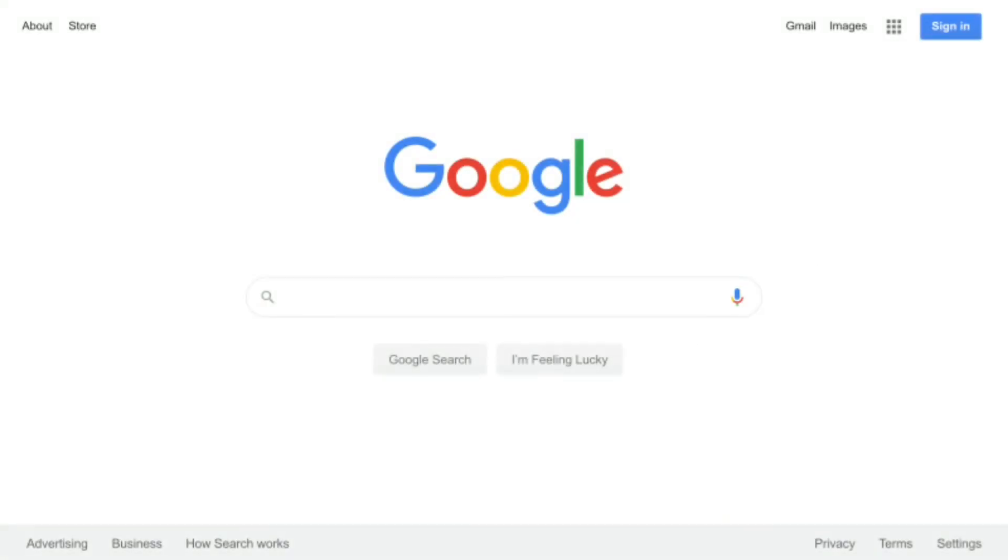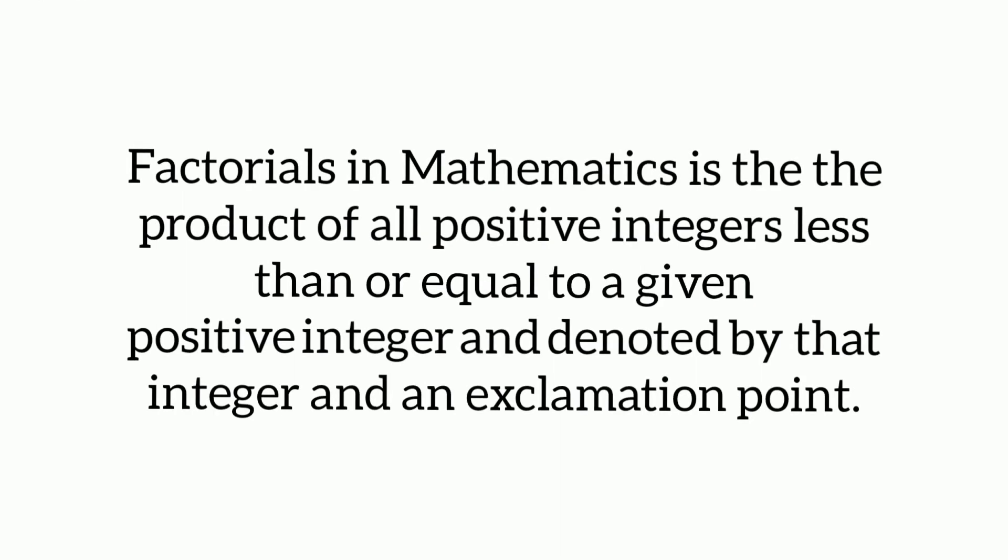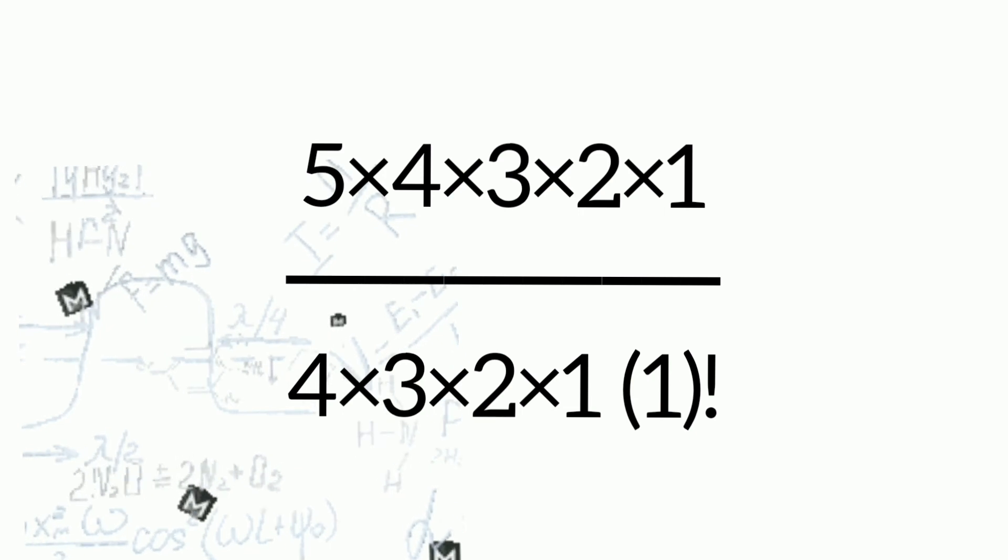I hope you paid attention in seventh grade math class because those exclamation points are factorials. If you didn't pay attention back then, here's a quick Google definition for you. Factorials in mathematics is the product of all positive integers less than or equal to a given positive integer and denoted by the integer and an exclamation point. Hope you got that because now we're doing the calculations.